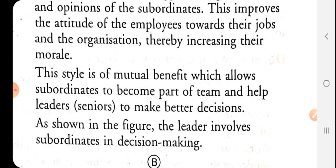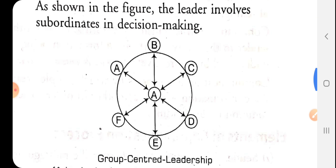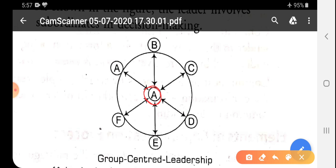In this style, subordinates and the leader work like a team and help each other in decision making. As shown in the figure, the leader involves subordinates in decision making — so we can call it group-centered leadership. The leader of the group is at the center, and all followers are connected to him. Arrows go both up and down, meaning the leader gives orders and also takes suggestions and opinions from followers to make effective and correct decisions. In the figure, A is the leader who consults with the group, but in autocratic leadership style, A is the leader who bosses around and gives orders.